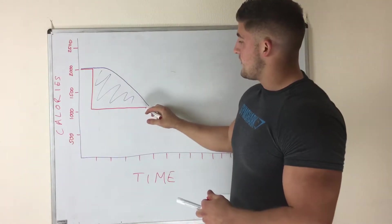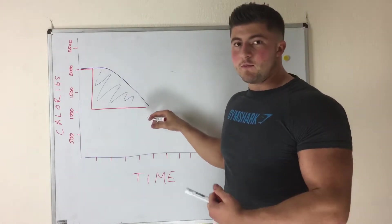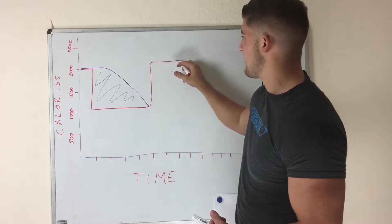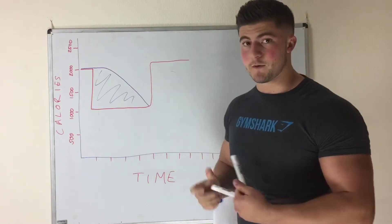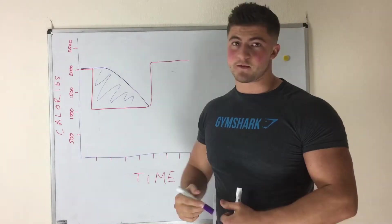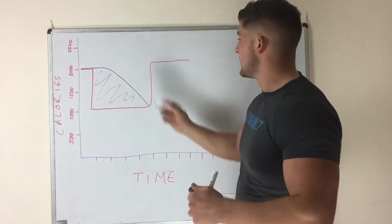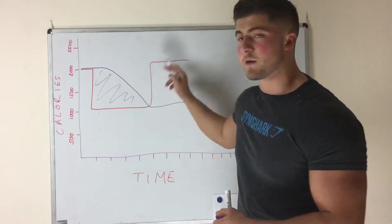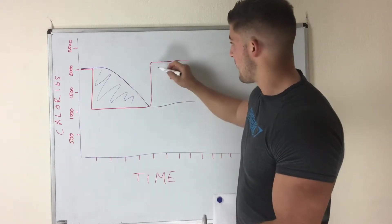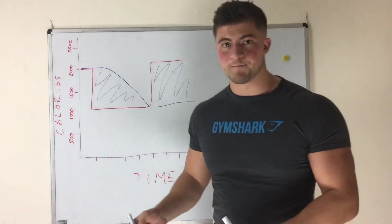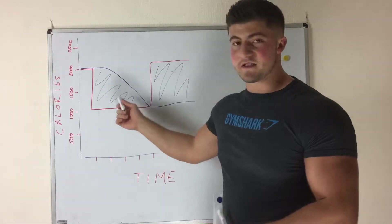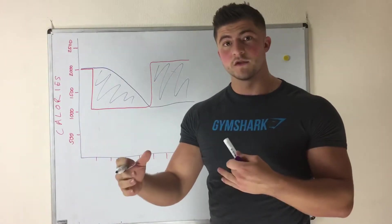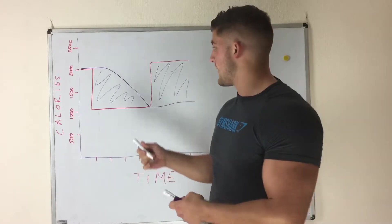So if you get to that point where you go, 'I'm not losing any more weight, I might as well just eat normally,' what happens is your calorie intake comes back up to what it was before. Usually you go over and above just because you're so hungry. But your metabolic rate stays fairly low and doesn't recover as quickly as you can eat more. So all of this now is fat gain. Within any diet you're going to lose about 25% of your total mass loss as muscle mass.